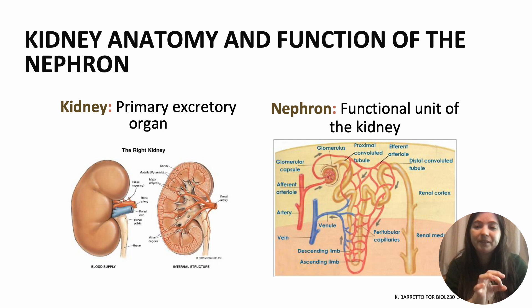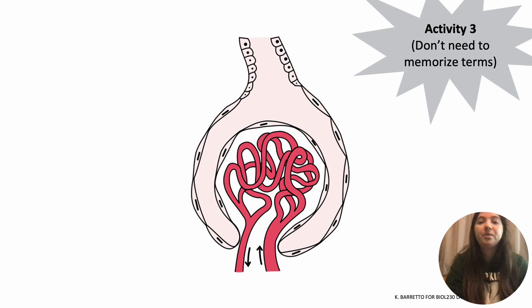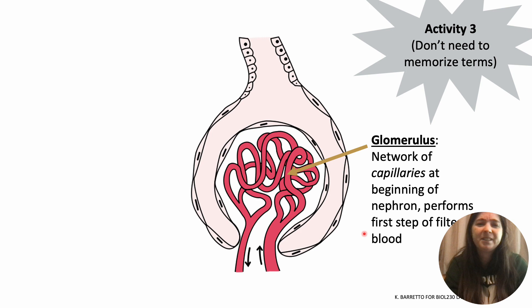A little cell called a nephron — nephrons are the tiny little filters inside of your kidneys. So this is a nephron, a drawing of a nephron. We're going to look at two main parts of the nephron. This is the glomerulus, and these are a network of capillaries beginning at the nephron, and it performs the first step of filtration.